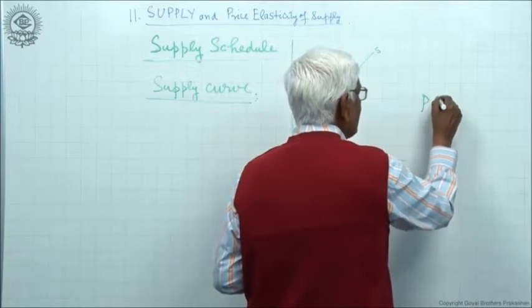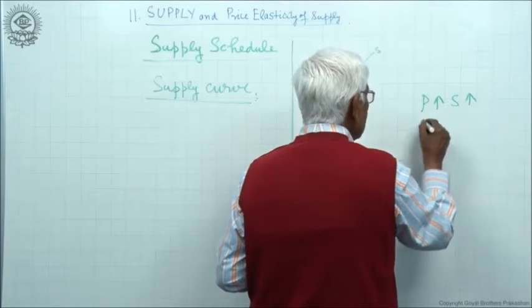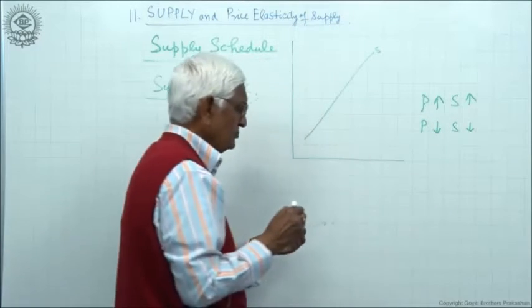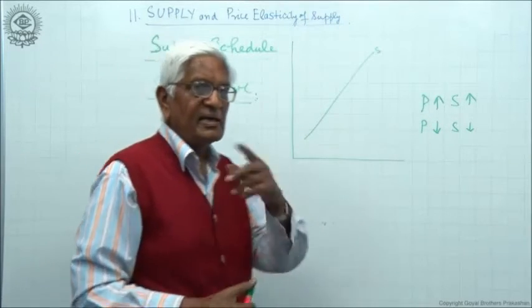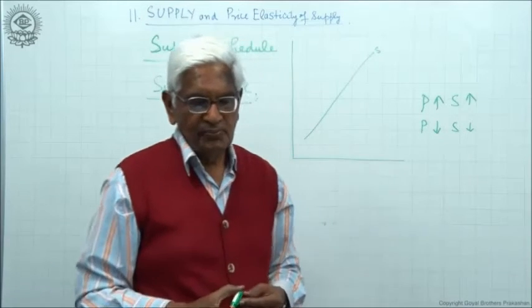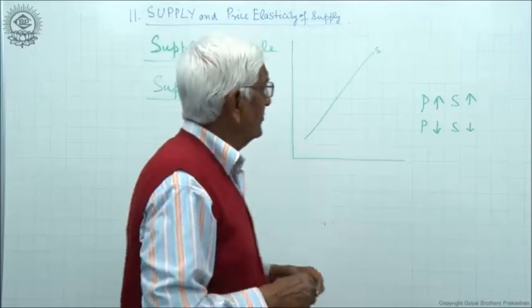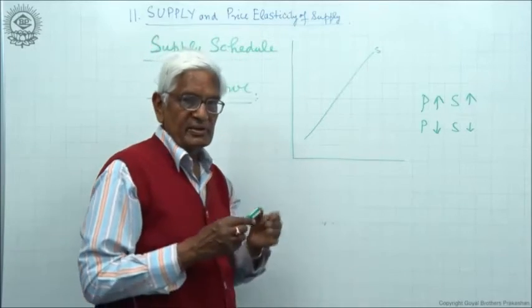It only means higher the price. If price rises, supply rises. If price falls, supply falls. So there is a direct relation between price and supply of an individual producer.